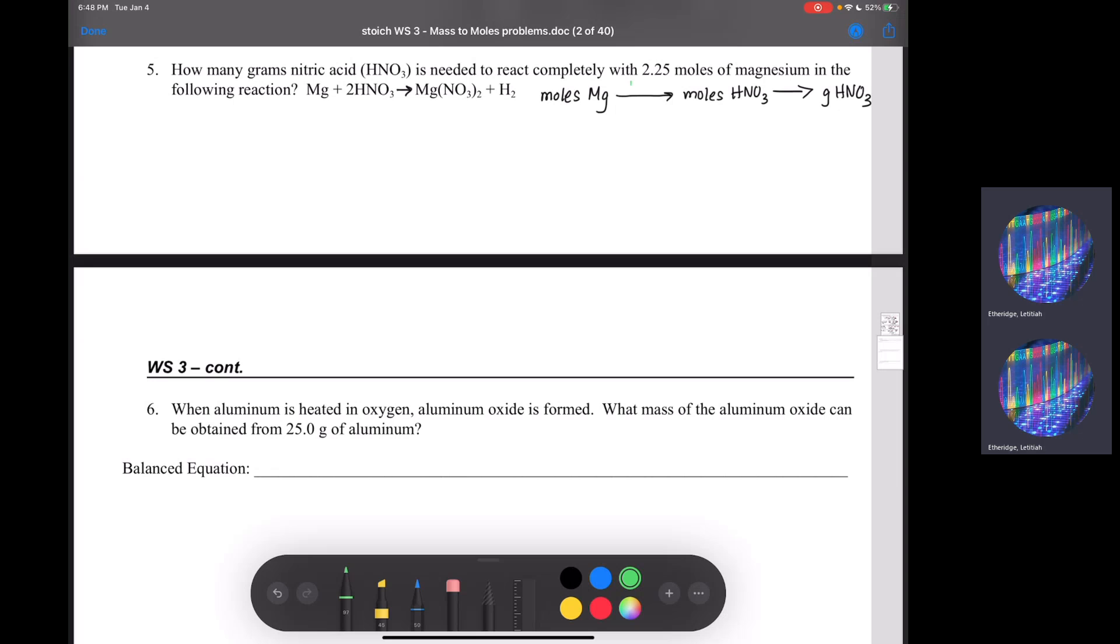When we're going from moles to moles, we are going to use the mole ratio. When we are going from moles to grams, we are going to use the molar mass. Just follow your molar map, please.